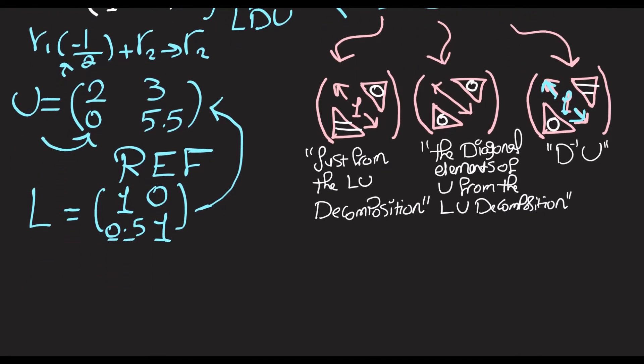...the same L that satisfies this, which is a lower unitary triangular matrix [[1, 0], [0.5, 1]], and then a diagonal matrix, and then U. But U this time has to be unitary.